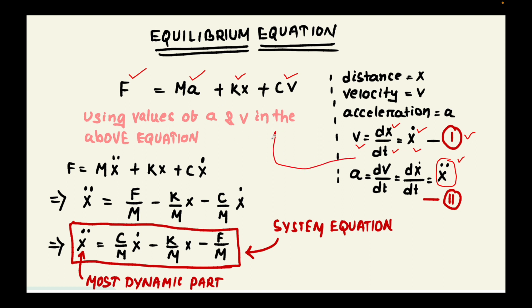Replacing all these things in the above equation we get this equation where mass into acceleration, acceleration will be replaced with X double dot, and KX, and then velocity will be replaced with X dot. In this case the main objective is to separate out the highest dynamic part or highest order part of the equation into one side and the remaining part into the other side.